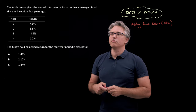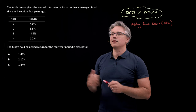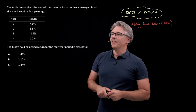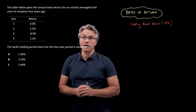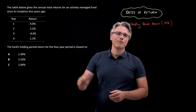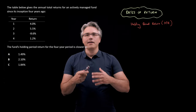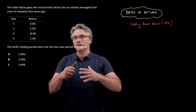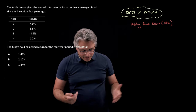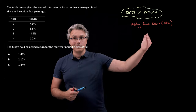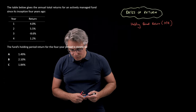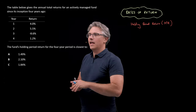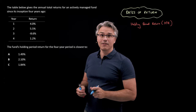The table below gives the annual total returns for an actively managed fund since its inception four years ago. You can see the returns over a period of four years. The question asks for the fund's holding period return for the four-year period. This asks how much an investment grows if it was invested in this fund over the accumulated effect of these four years.